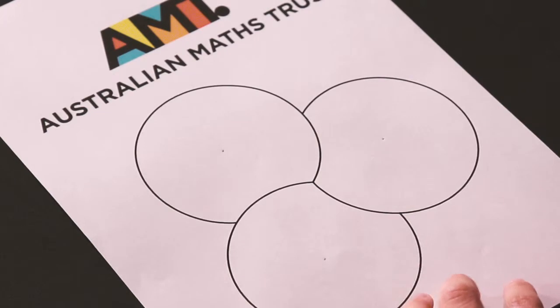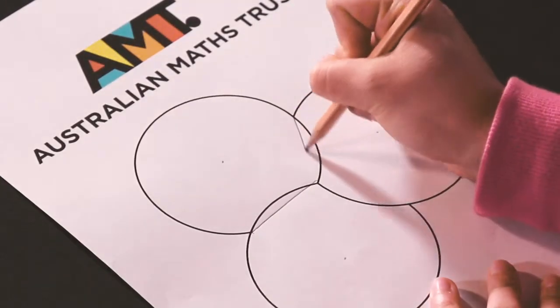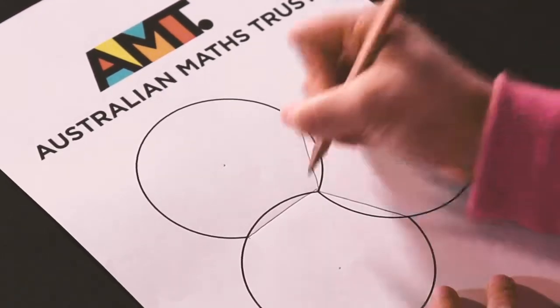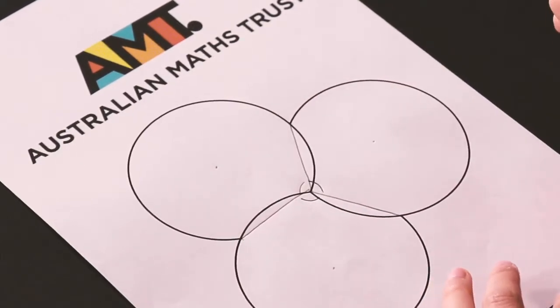So like last time, we'll start by adding these three lines in, and because of the rotational symmetry we have that these three angles are all equal to 120 degrees.